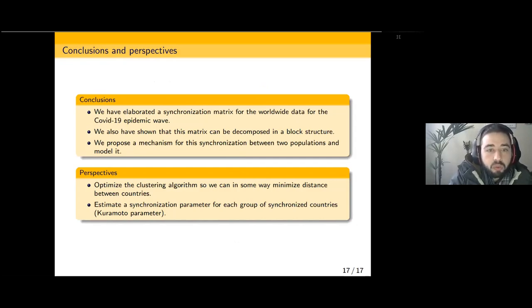To conclude, we have so far elaborated a synchronization matrix for worldwide data for the COVID epidemics and have shown that this matrix can be decomposed in a block structure. We also propose a mechanism for this synchronization via migration or connectivity between two populations. For the future, we intend to optimize the clustering algorithm so we can minimize the distance between countries and then estimate the synchronization parameter for each group of synchronized countries.